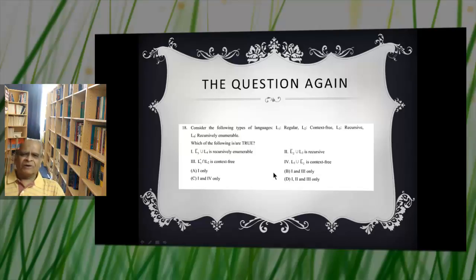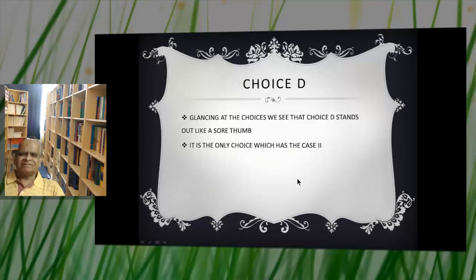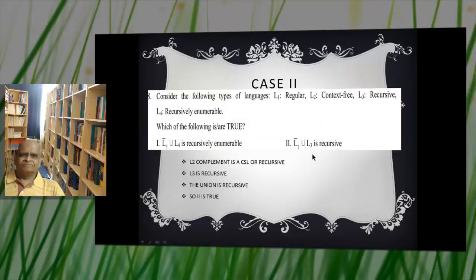Choice A depends on 1. Choice B are 1 and 3. Choice C are 1 and 4. D depends on 1, 2 and 3. Choice D stands out because the only choice which has 2 is D. What does choice 2 say? L2 is a context-free language. Complement is not context-free but is recursive. L3 is recursive. Union of two recursives is recursive.